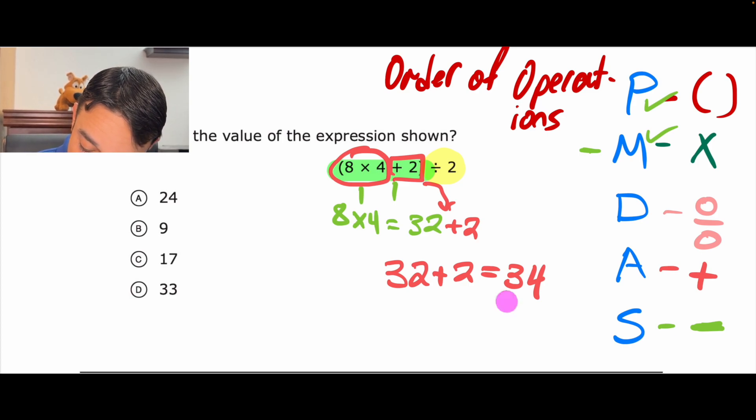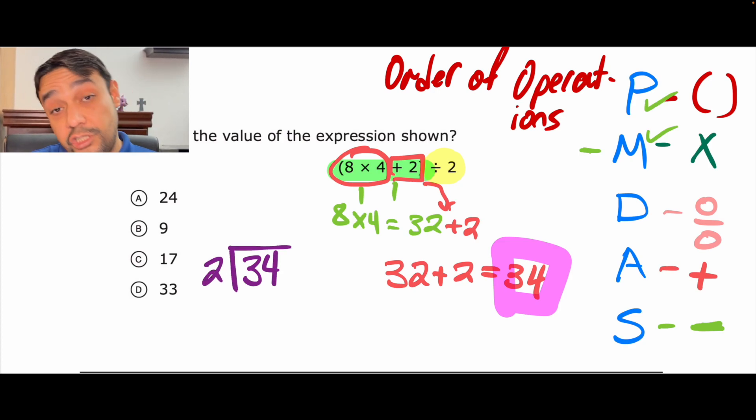So, our last thing was 34. And we're just going to divide that by 2. Here we go. 34 divided by 2. Now, you know your facts. This should be a lot easier for you. If you don't, just take it step by step.